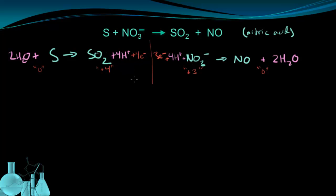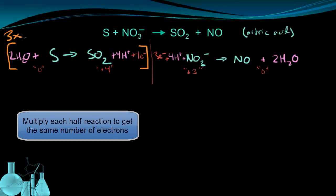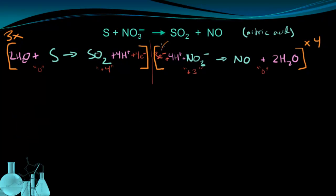Now I just need to get the two half-reactions equal in terms of electrons lost and gained. I take the entire first half-reaction and multiply it by three, and I take the entire second half-reaction and multiply it by four. That gives me 12 electrons in each case. I'm going to rewrite these and stack them on top of each other so I can combine the two half-reactions back into a whole reaction.